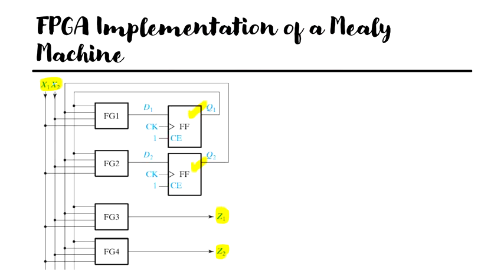The four LUTs that is FGs or function generators are required. So you can see there are four function generators and two will generate the D inputs to the flip-flops. The flip-flops output is fed back to the CLB inputs via the interconnections external to the CLB. The entire circuit will fit into one Vertex CLB and this implementation works because each D and Z is a function of only four variables that is X1, X2, Q1 and Q2.